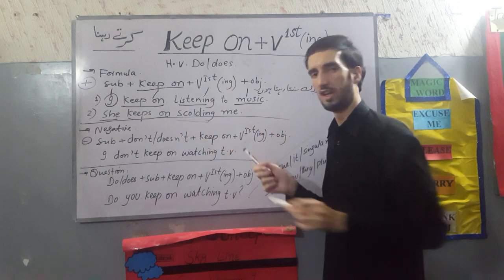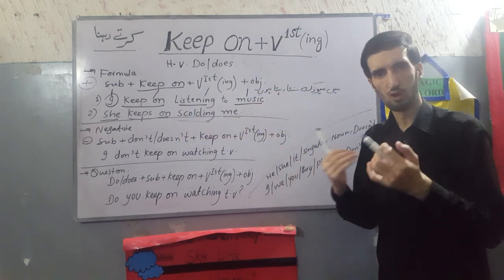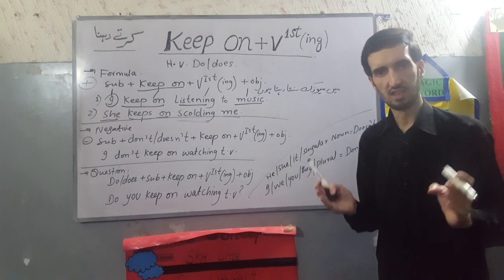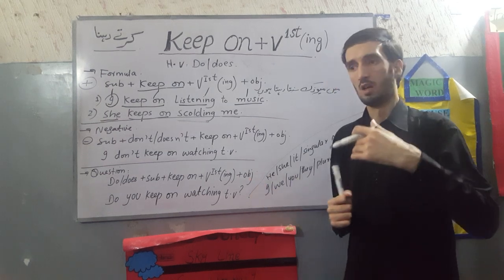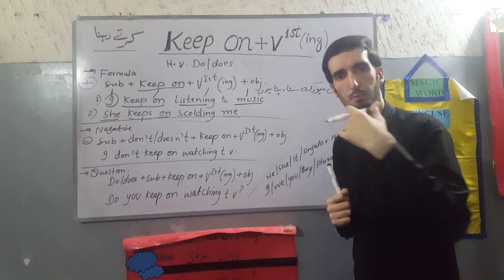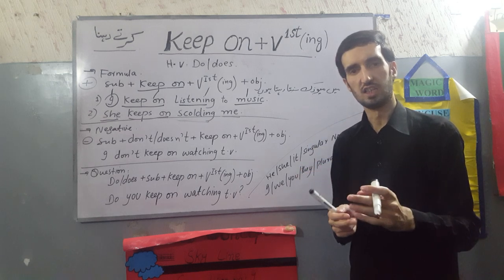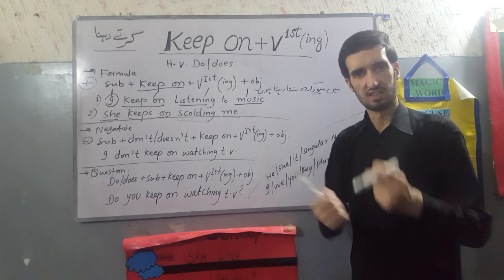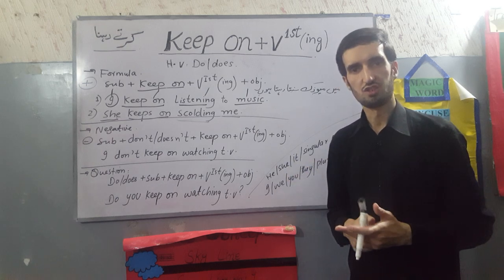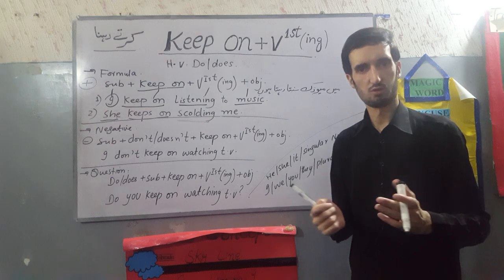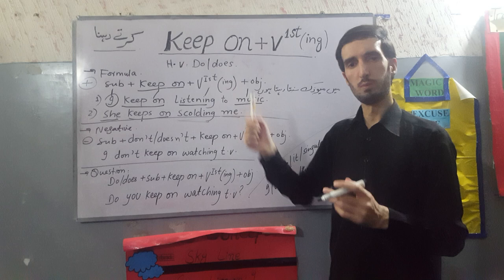So, this is a verb. I have written scolding and the object is me. She keeps on scolding me. She keeps on dancing. She keeps on driving a car. She keeps on smiling.